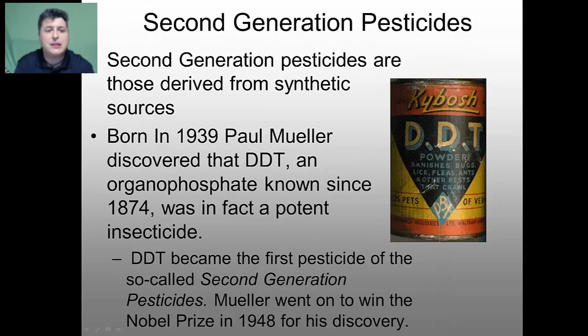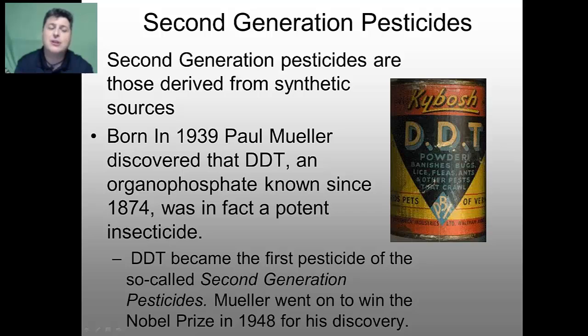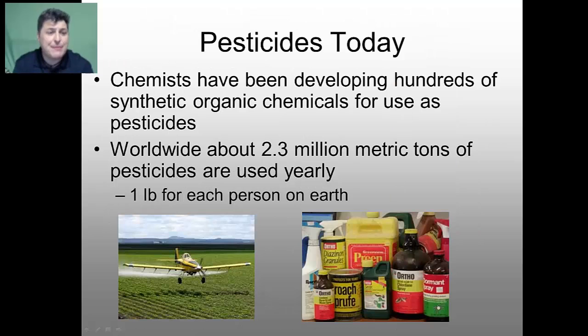The second generation pesticides were those derived from synthetic sources. One of the first was developed into an insecticide in 1939 by Paul Mueller — this chemical was known as DDT. It was known as an organophosphate chemical and was a very potent insecticide, though it wasn't fully developed and brought to market until the early 1900s. As a result of its overall effectiveness, DDT became the first pesticide of the so-called second generation, and Mueller went on to win the Nobel Prize in 1948 for its discovery.